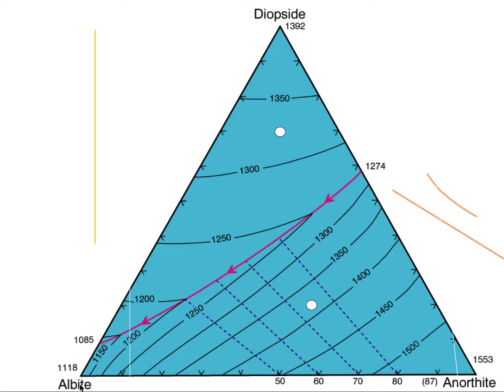But if we take a look at albite and anorthite, there's no eutectic there. We've looked at that binary system. That is a solid solution. So we're looking at a system that combines two eutectics, two binary eutectics with a binary solid solution.